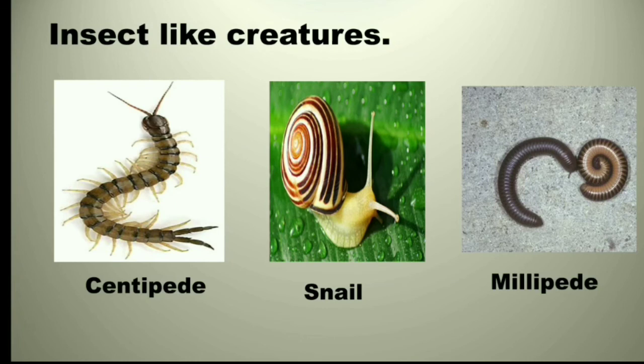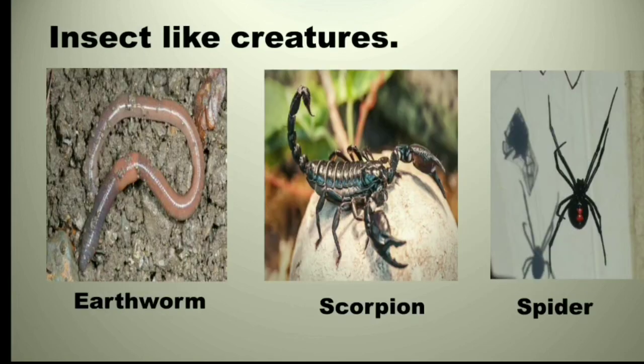Insect-like creatures: there are many creatures which look like insects but they are not. For example, centipede, snail, millipede, earthworm, scorpion and spider are such creatures commonly seen around us. These are known as creeping or crawling animals. Thank you.